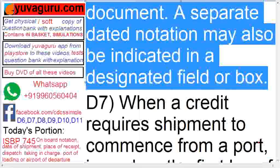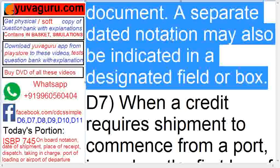A separate dated notation may also be indicated in the designated field or box. Somebody can write the on-board date in various places — wherever the port of loading is, they can write the on-board date separately. The simple logic is: anywhere an on-board date is given separately, that date is to be considered, not the date of issuance.